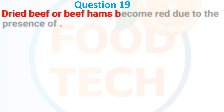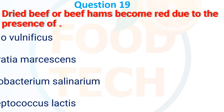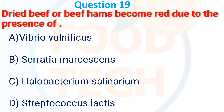Dried beef or beef jerky becomes red due to the presence of: A, Vibrio alginolyticus; B, Serratia marcescens; C, Halobacterium salinarum; D, Staphylococcus lactis. The answer is C, Halobacterium salinarum.